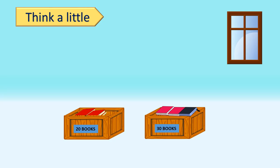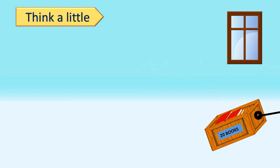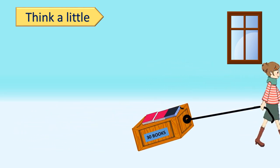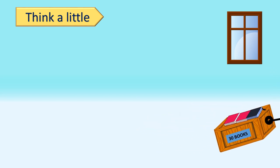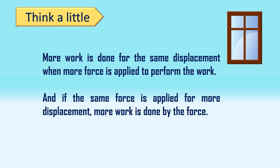Ria has two boxes loaded with 20 and 30 books respectively. She wants to place these boxes into another room, so she tied strings to the boxes and pulled them one by one from a distance of 2 meters along a straight line. We know that to pull, push and lift greater weights, we apply greater force. Here, Riya applied more force when she pulled the box with 30 books for the same displacement. From this, we can say that more work is done for the same displacement when more force is applied.